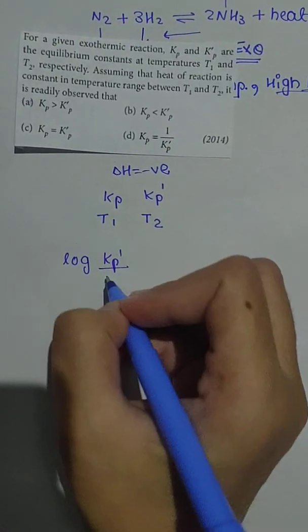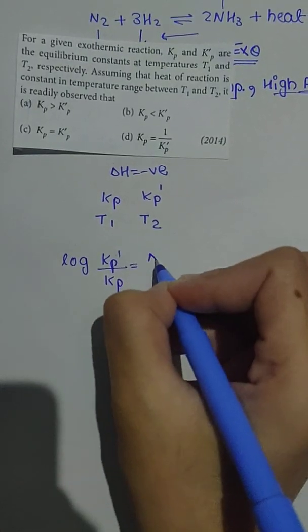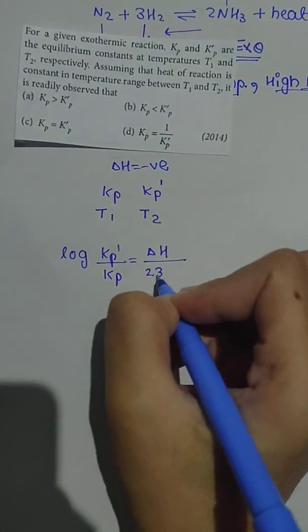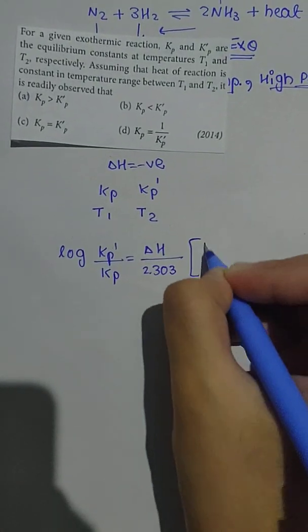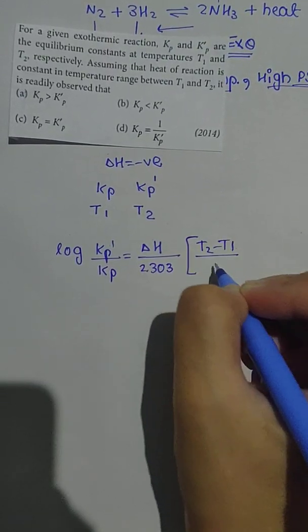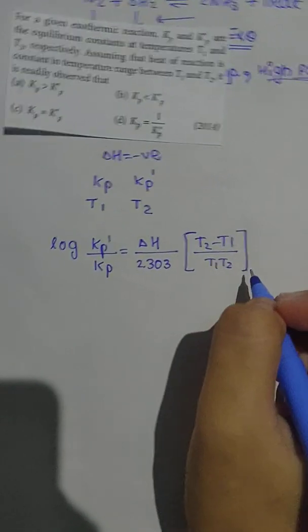k2 is kp prime, k1 is kp. This will be equal to delta H upon 2.303, bracket, T2 minus T1 upon T1 times T2. This is the relation from our Arrhenius equation.